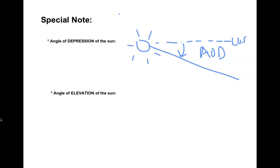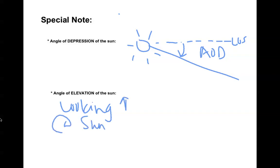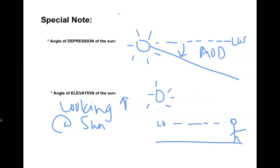The angle of elevation of the sun — think of looking up at the sun. So if you were standing here on the ground, here's your line of sight. You're looking up at the sun, so this angle is going to be called the angle of elevation of the sun.